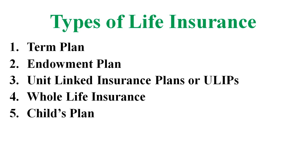Number five: child's plan — an investment income insurance policy which provides financial aid for your children throughout their lives. The death benefit is available as a lump sum payment after the death of a parent. Number six: money back. Such policies pay a certain percentage of the plan's sum assured after regular intervals. This is known as survival benefit.